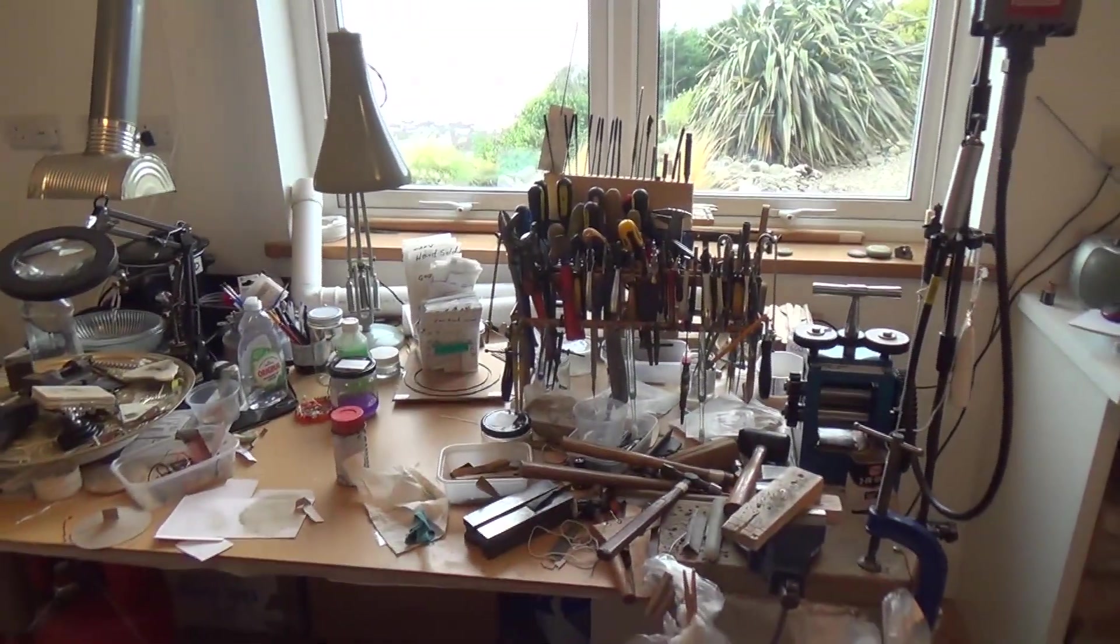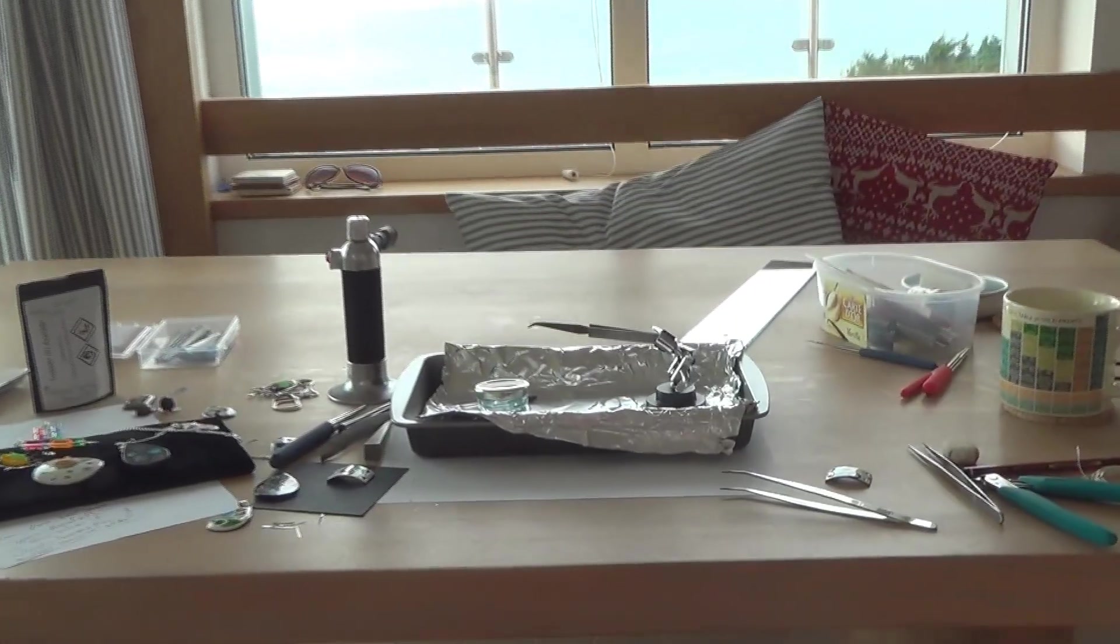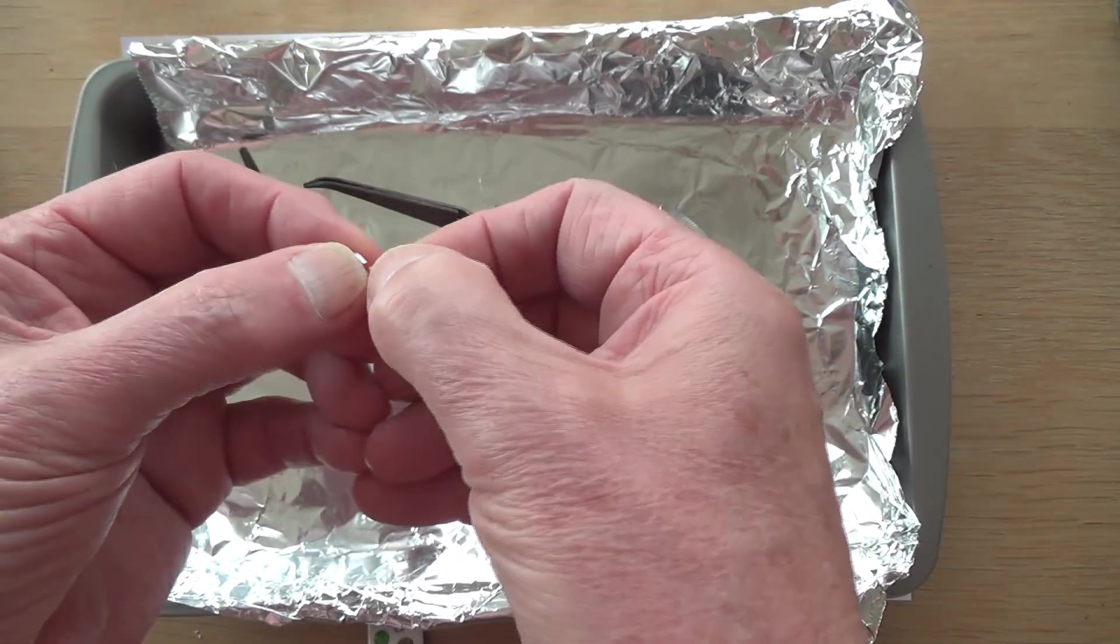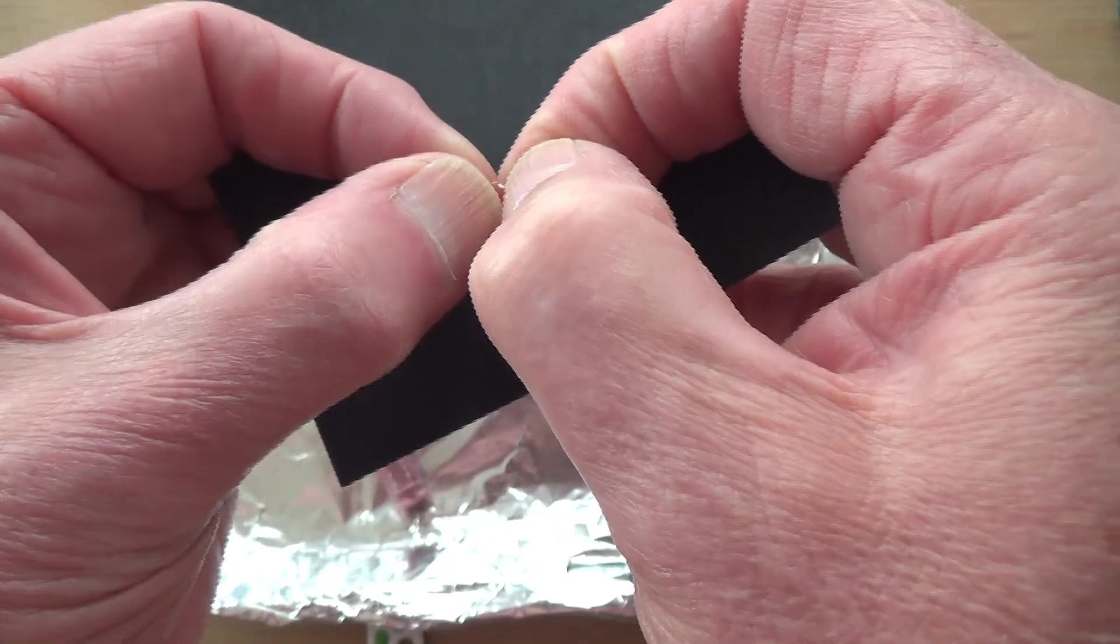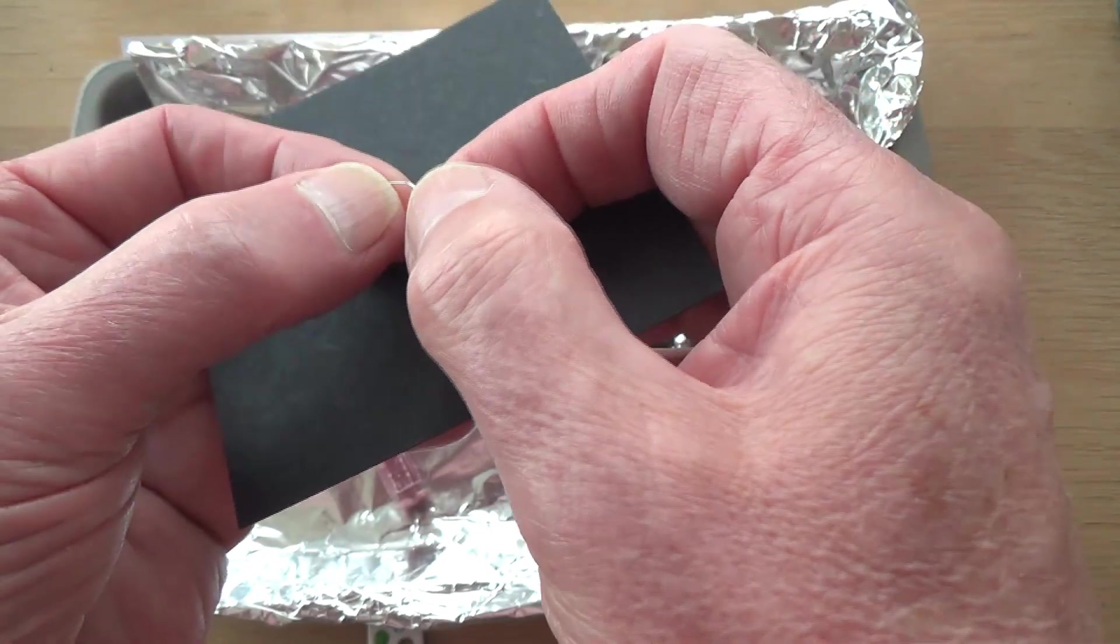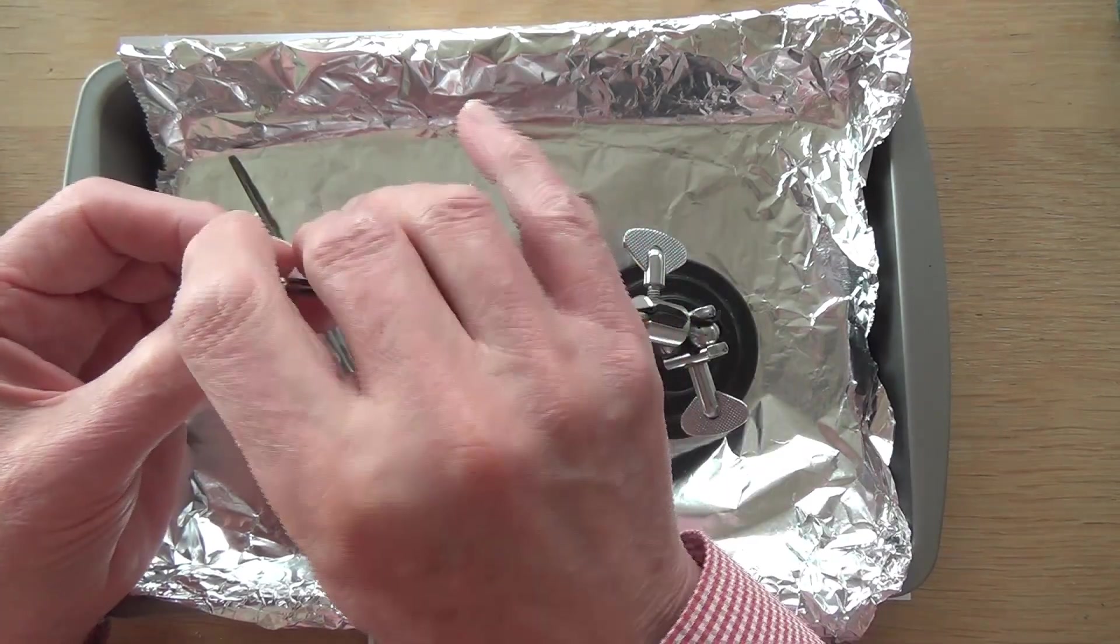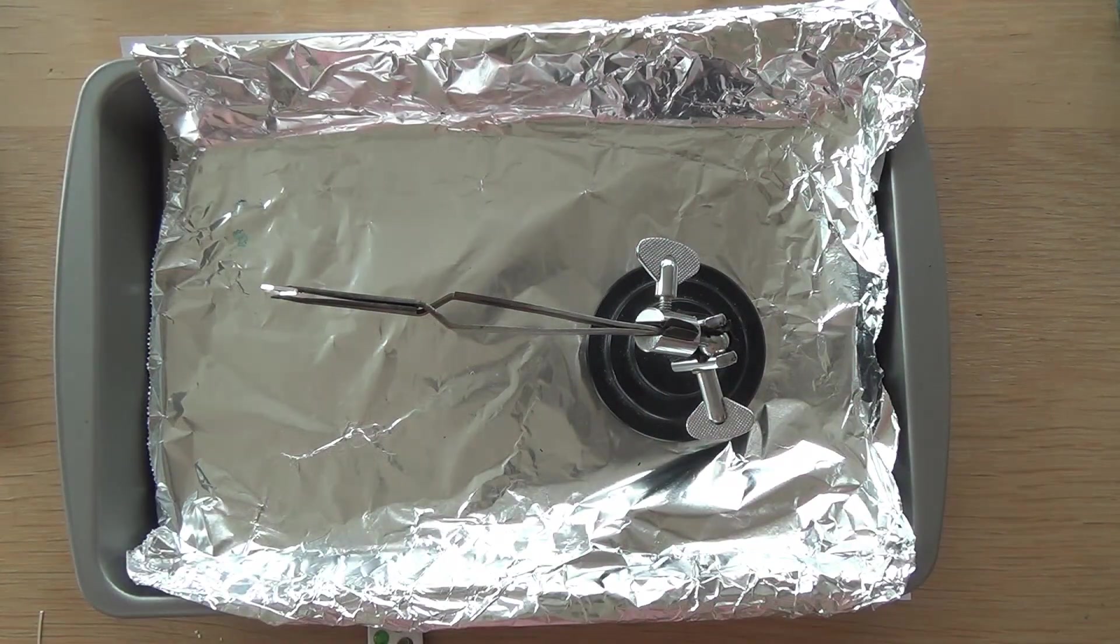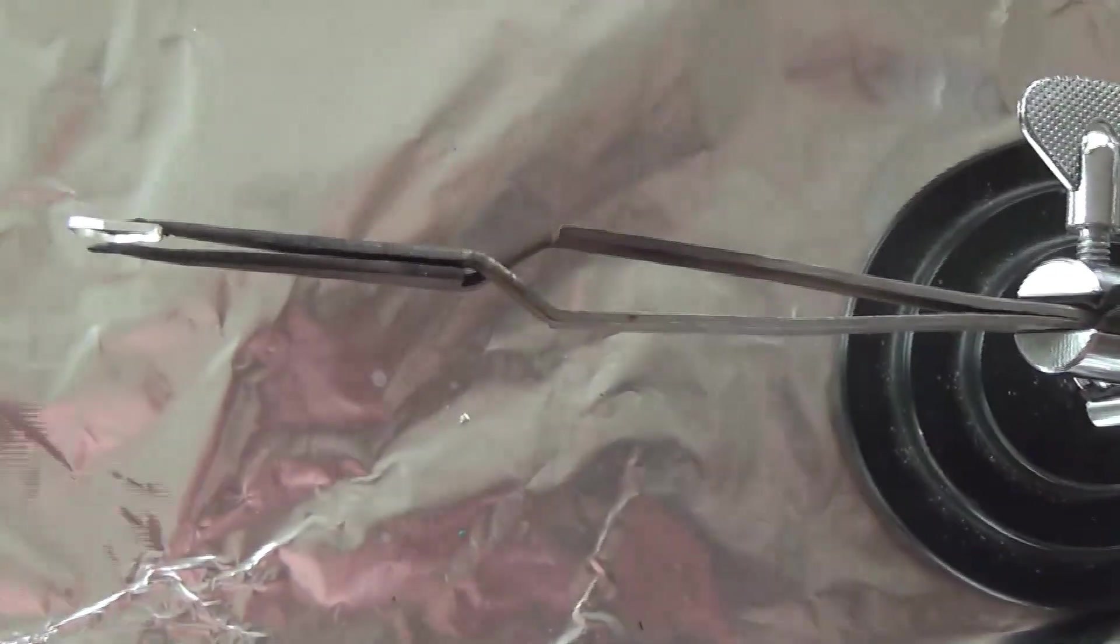I normally do this in my workshop but I want to show you it's not rocket science, so I'm doing it on the kitchen table. I'm going to take one of these bits of wire that I've cut off and bend it into a rough circle. The idea is I want to bring the ends together to make a butt joint and close it the same way you would close a jump ring so that it's sprung together.